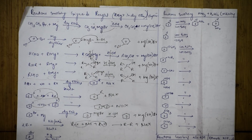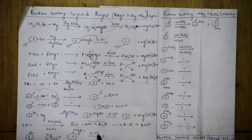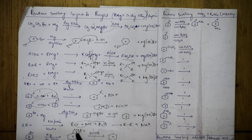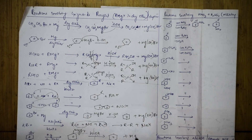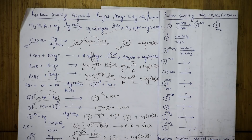Here, what do I have? I have Na with dry ether - that means I need to follow Wurtz reaction. If it is magnesium dry ether, I need to follow Grignard's addition reaction. So what do they give me? This reaction means 2RX, that is RX plus Na plus RX. I take NaX out and I get R-R plus NaX.